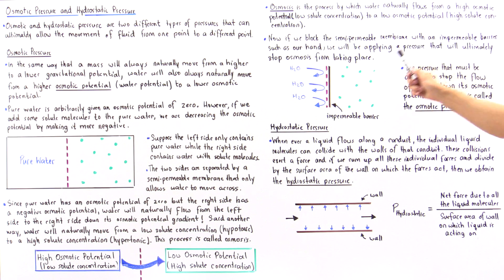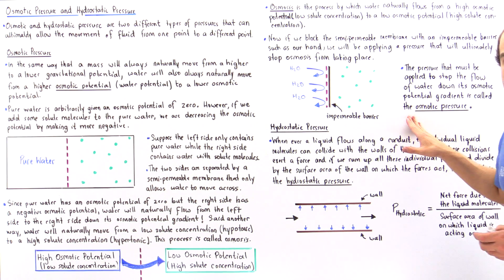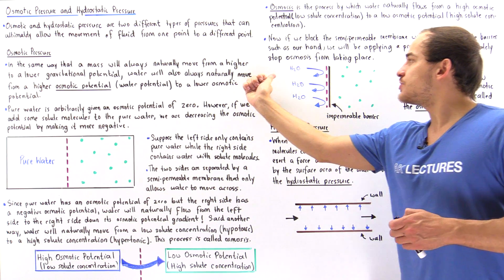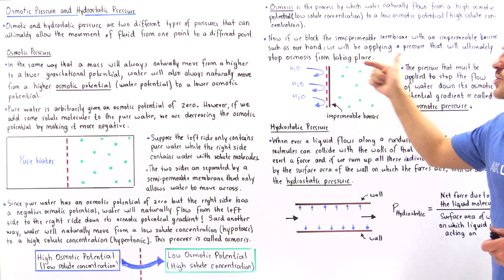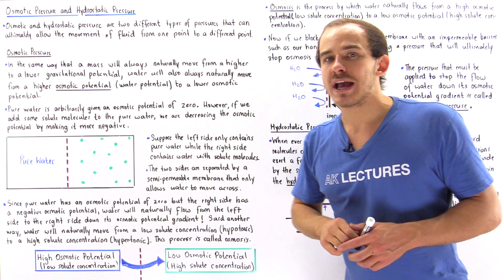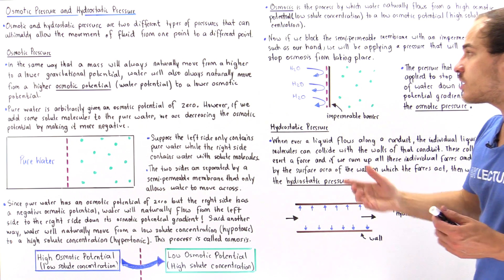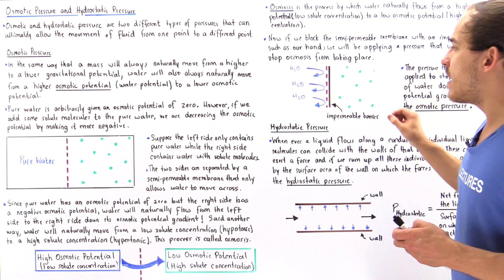The pressure that must be applied to stop the natural flow of water down its osmotic potential gradient is called osmotic pressure. The water tries to move across, but the osmotic pressure points in the opposite direction, ultimately stopping the water from moving across the membrane.